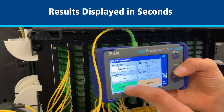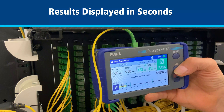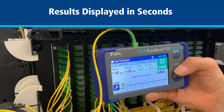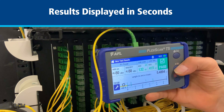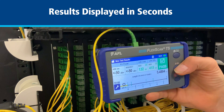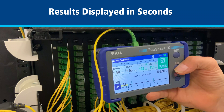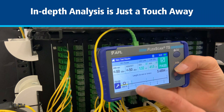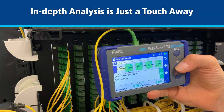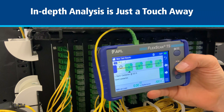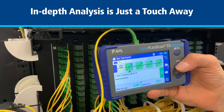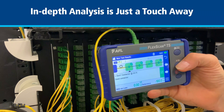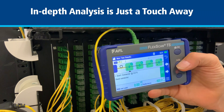Touch Press to Start. Within seconds, link length, loss, ORL and events to the end are detected and displayed. As before, touching the link map thumbnail accesses a more detailed link map with event measurements and recommended corrective actions for any detected faults.